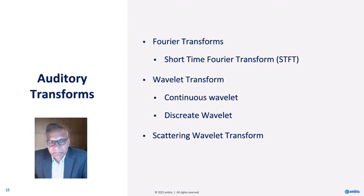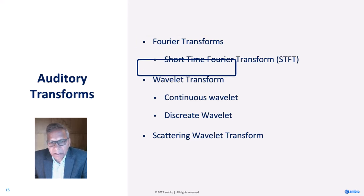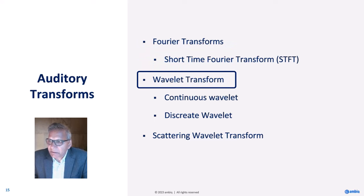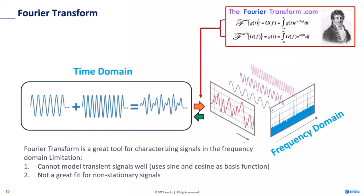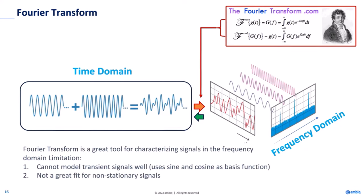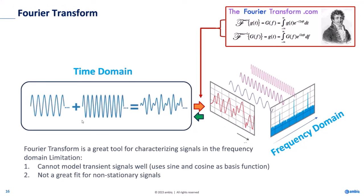The next topic is auditory transforms. We'll discuss the short-time Fourier transform, wavelet transform — covering continuous versus discrete wavelet transform — and a third type known as the scattering wavelet transform. Fourier invented the Fourier transform way back, and it converts signals from the time domain to the frequency domain and back. It's a very powerful tool that has been widely used since the 18th century and up until today.